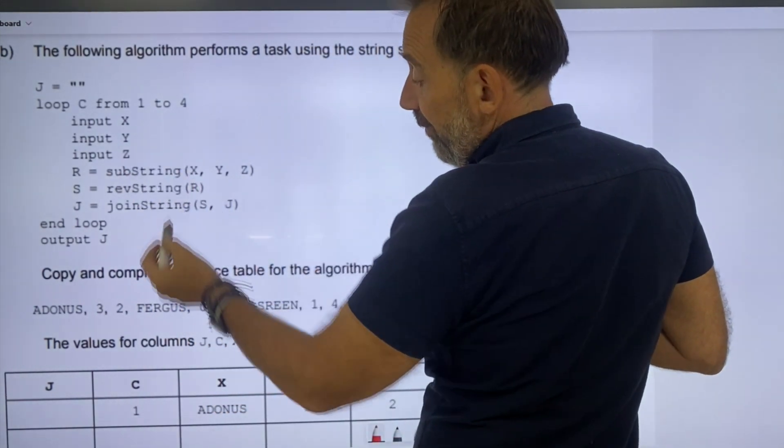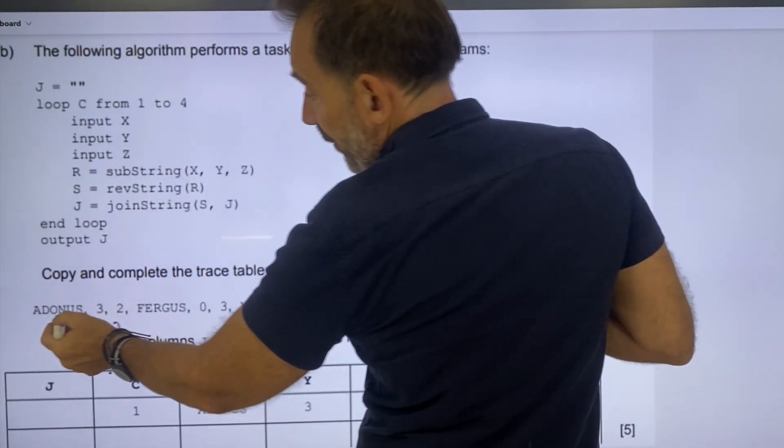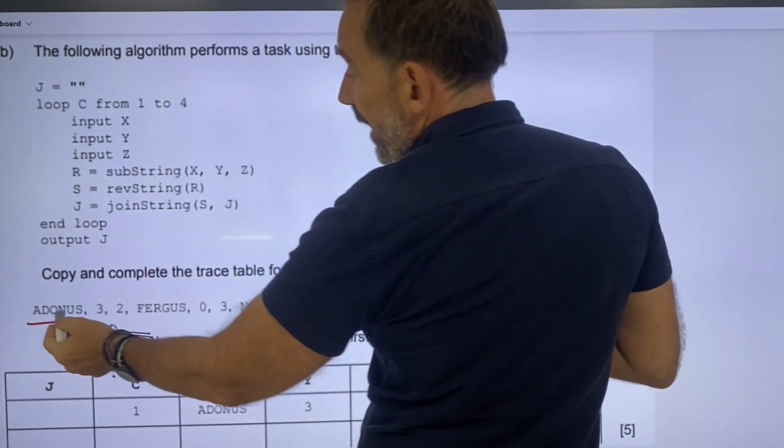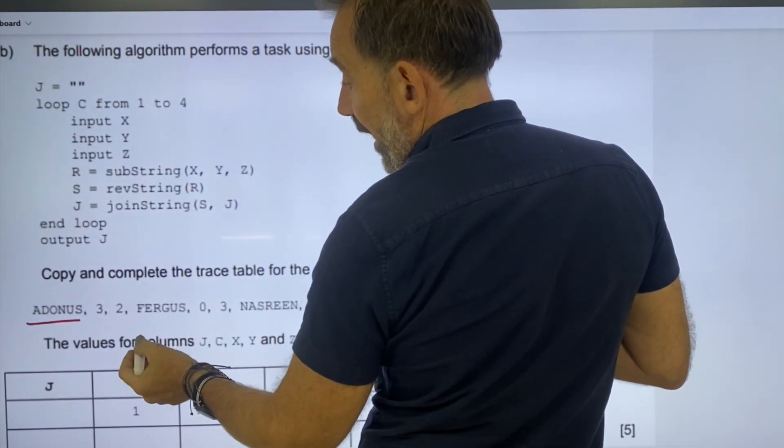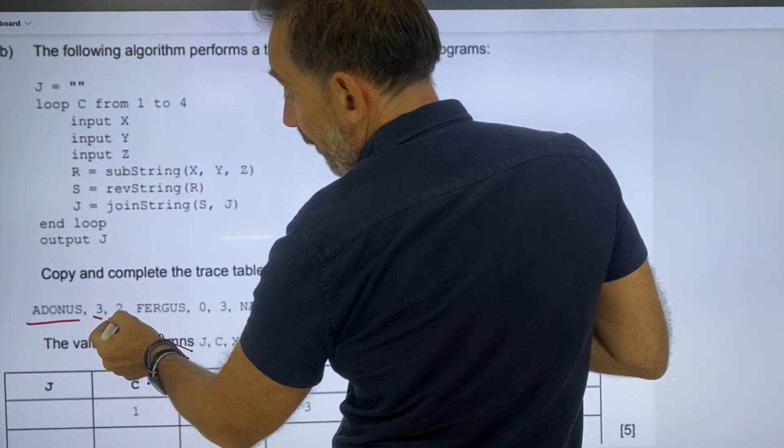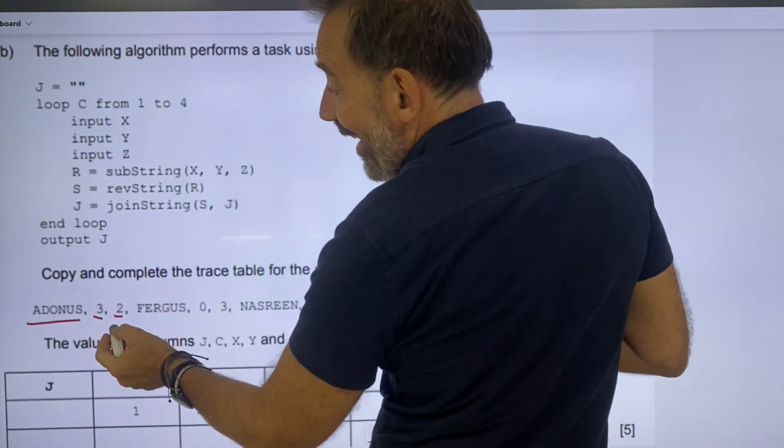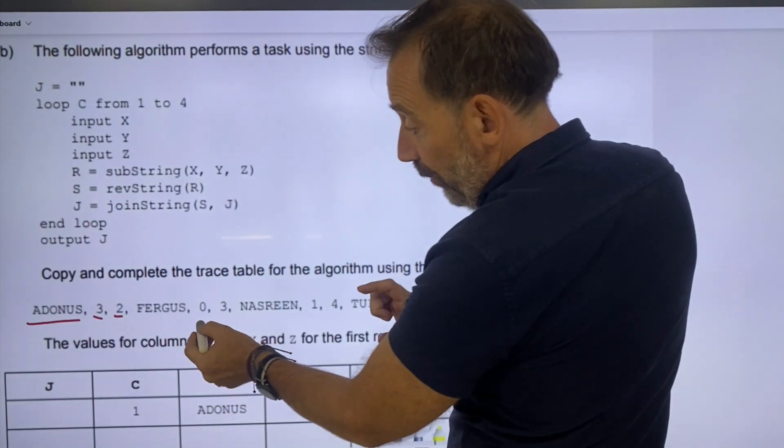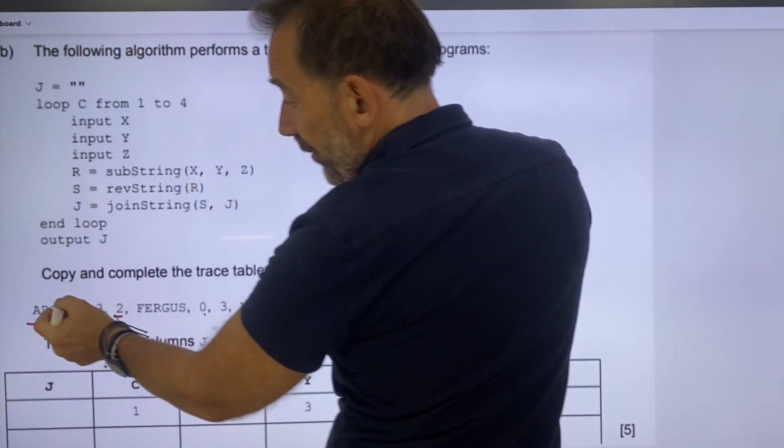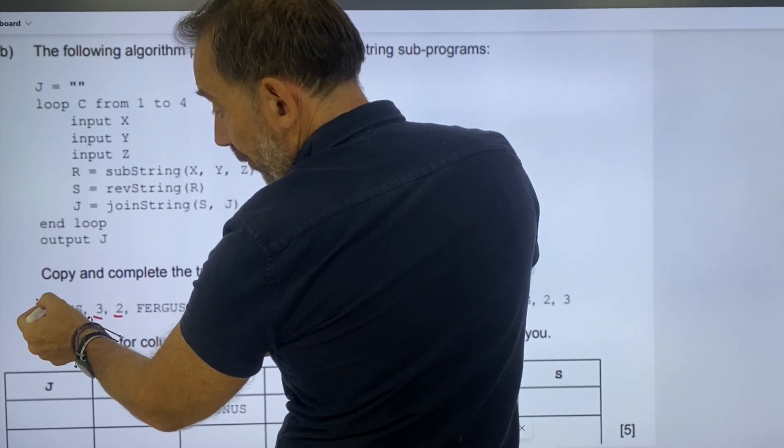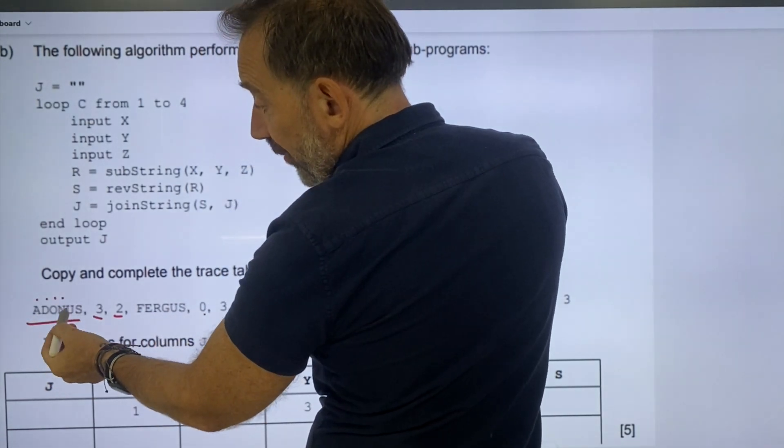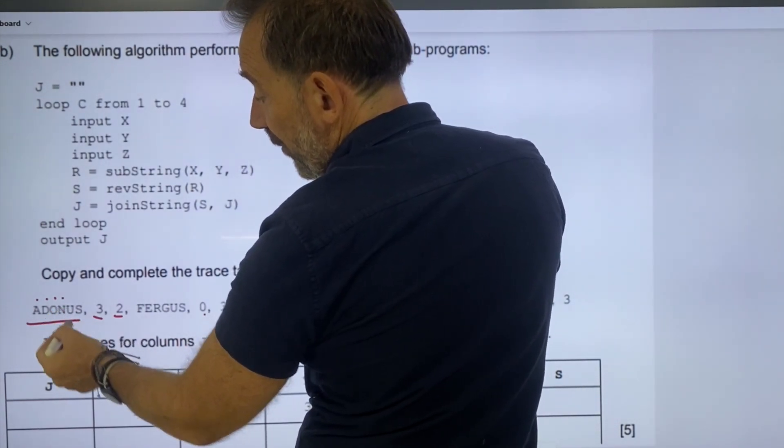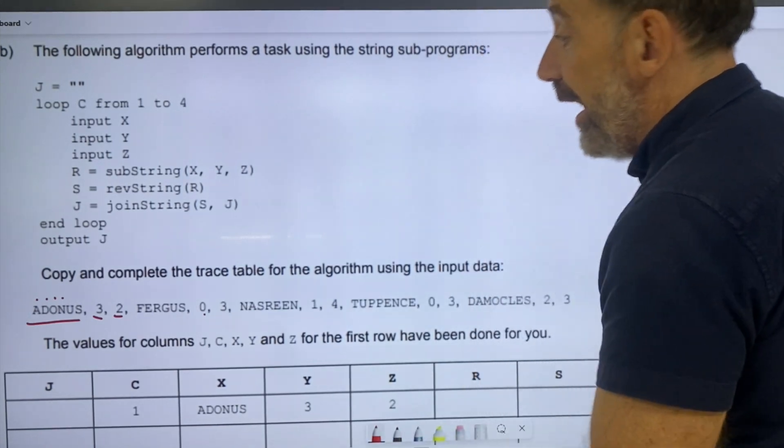Substring is basically taking the value x, which if we go to the first value, would be Adonis. We're going to take that and say, okay, Adonis has got a value of 3 and a value of 2, so we're going to start at the third position, bearing in mind the first value is 0. We'll look at Fergus, so 0, 1, 2, 3, and we're going to take two values, so we're going to take the n and the u in this case. We're going to be using the n and the u. What do I mean? I will show you.